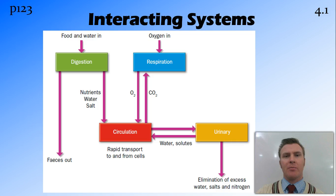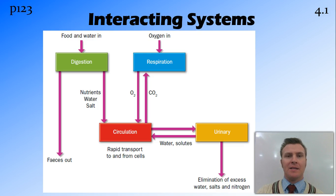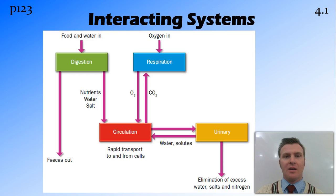Once that blood moves around the body, it is in contact through the capillaries with the cells that require those nutrients and oxygen. After that happens, the waste products from those processes that happen in the cell get put back into the blood and circulated through the urinary system, which then eliminates and excretes the waste products. This is a nice little schematic of how the different systems interact with each other.